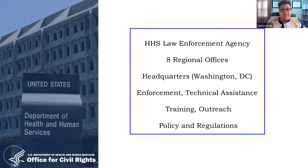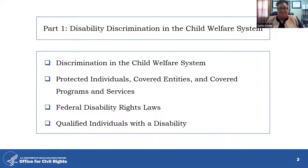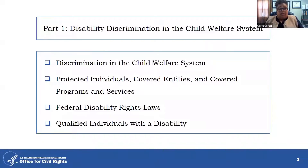To learn more about OCR, please check out the resource page at the end of part one and part two of this presentation. Part one of the webinar, Disability Discrimination in the Child Welfare System, answered frequently asked questions by members of the child welfare community, such as who is protected by disability non-discrimination laws, what covered entities must comply with these laws, and which child welfare programs, services, and activities are subject to non-discrimination requirements. Part one also provided an overview of Section 504 of the Rehabilitation Act of 1973 and Title II of the Americans with Disabilities Act of 1990, and we learned how these laws protect qualified individuals with a disability.